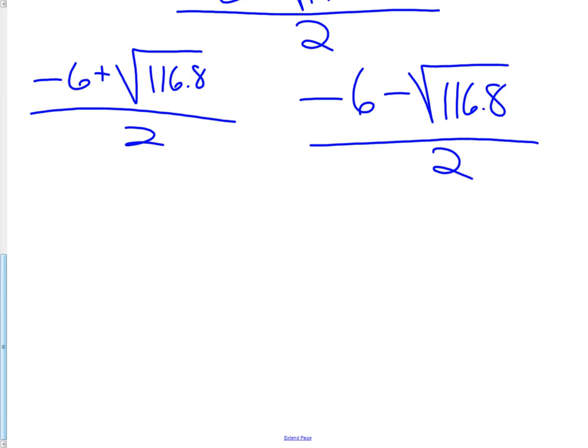So get out your calculators and make sure that you know how to do these. The first one would give me 2.4, and the second one would give me -8.4. Again, we are finding radiuses, so we can eliminate the negative answer, and we're left with just 2.4.